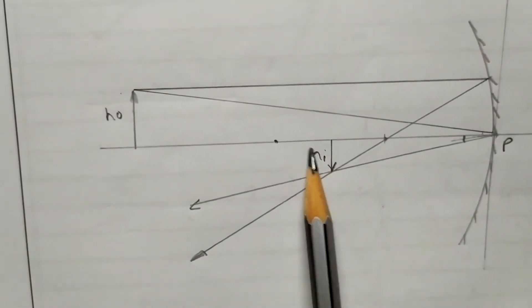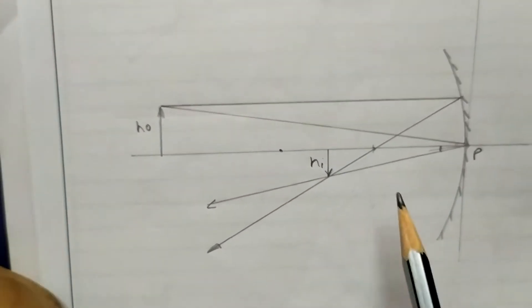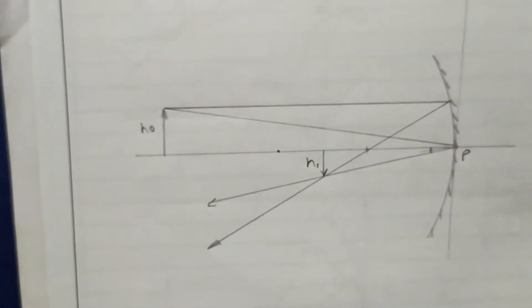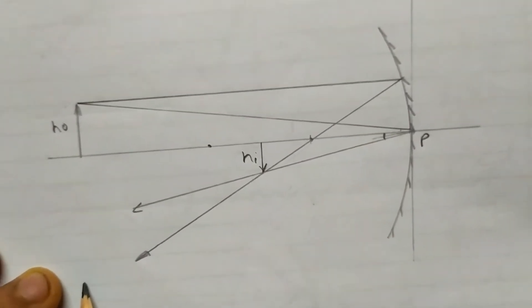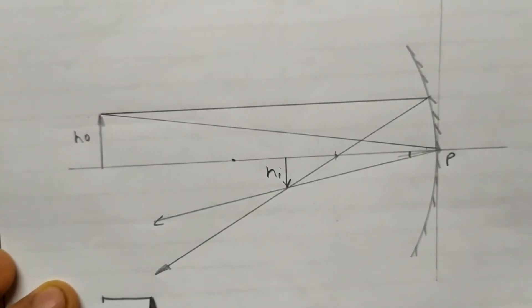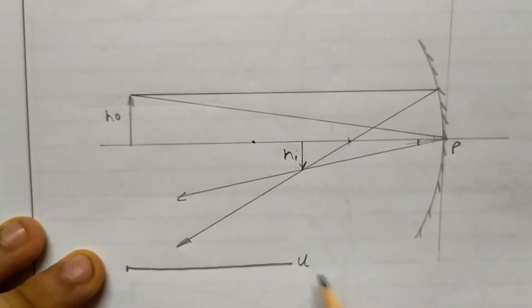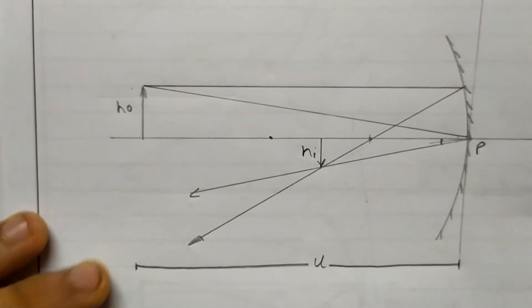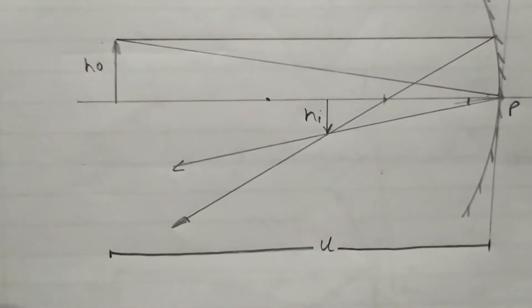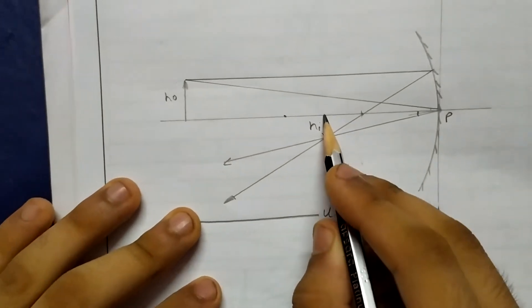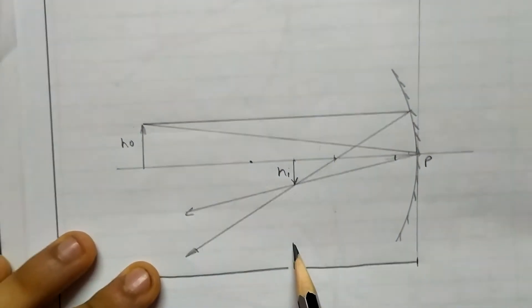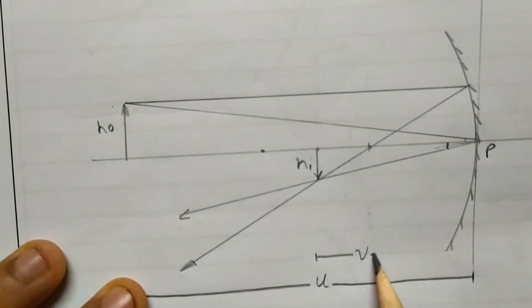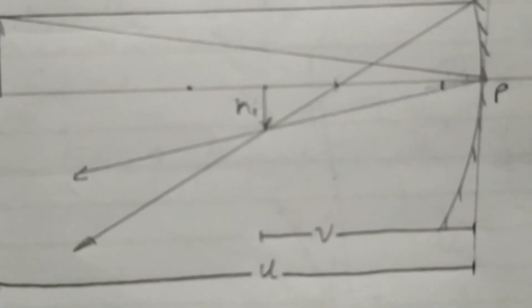The height of the image h-i is negative because of the sign convention. The distance from the object to the pole of the mirror is represented by u — this is called the object distance. The distance of the image from the pole is known as v — the image distance. The focal length is called f.